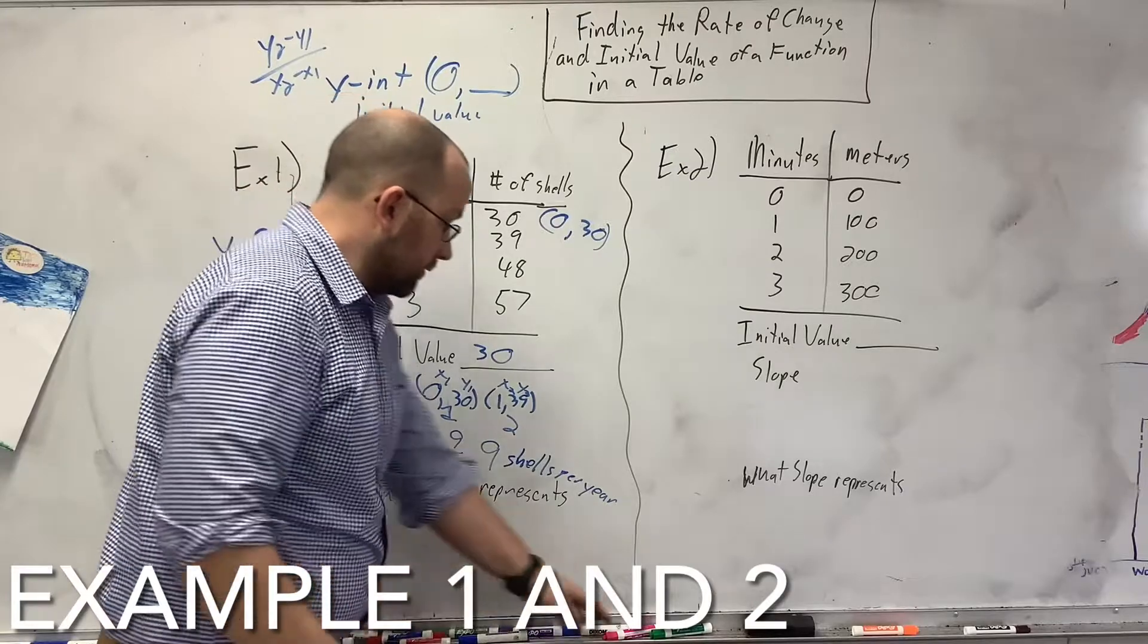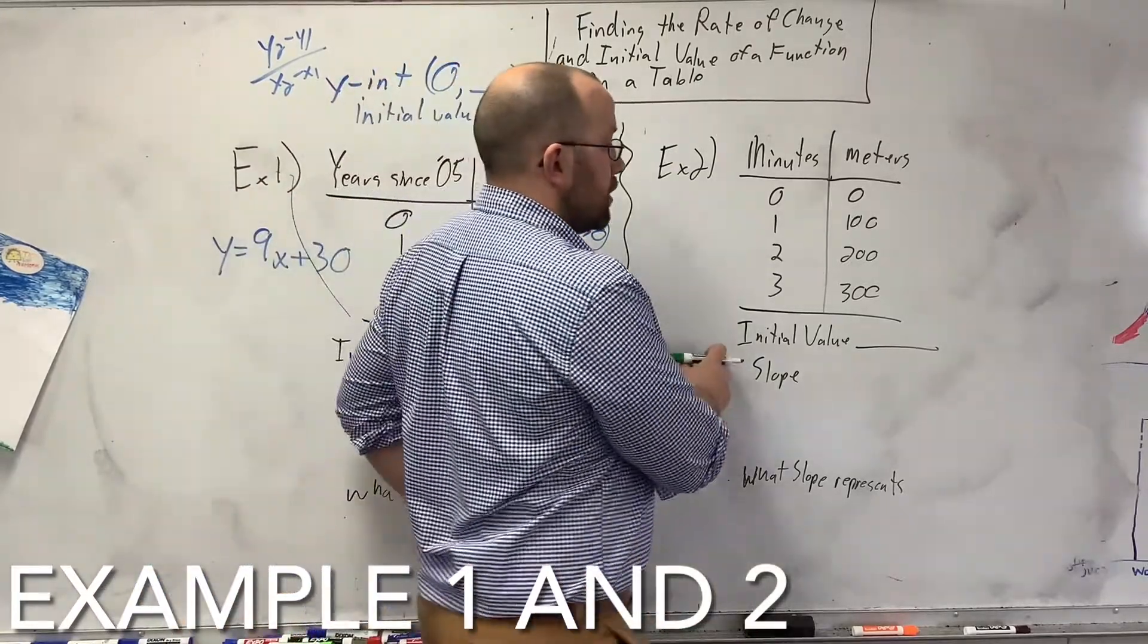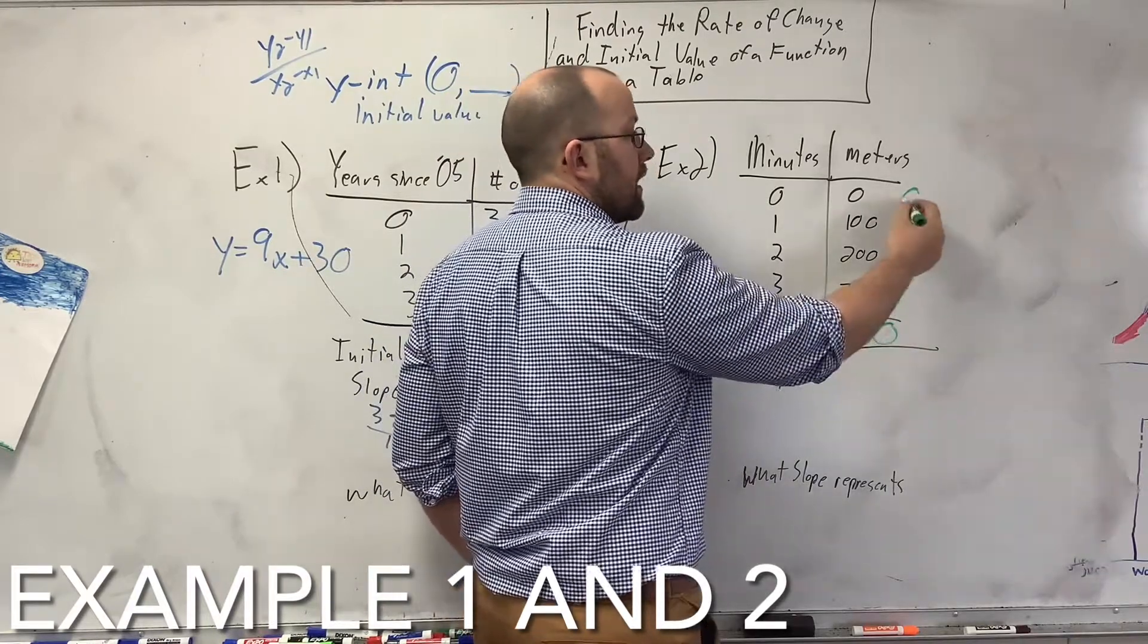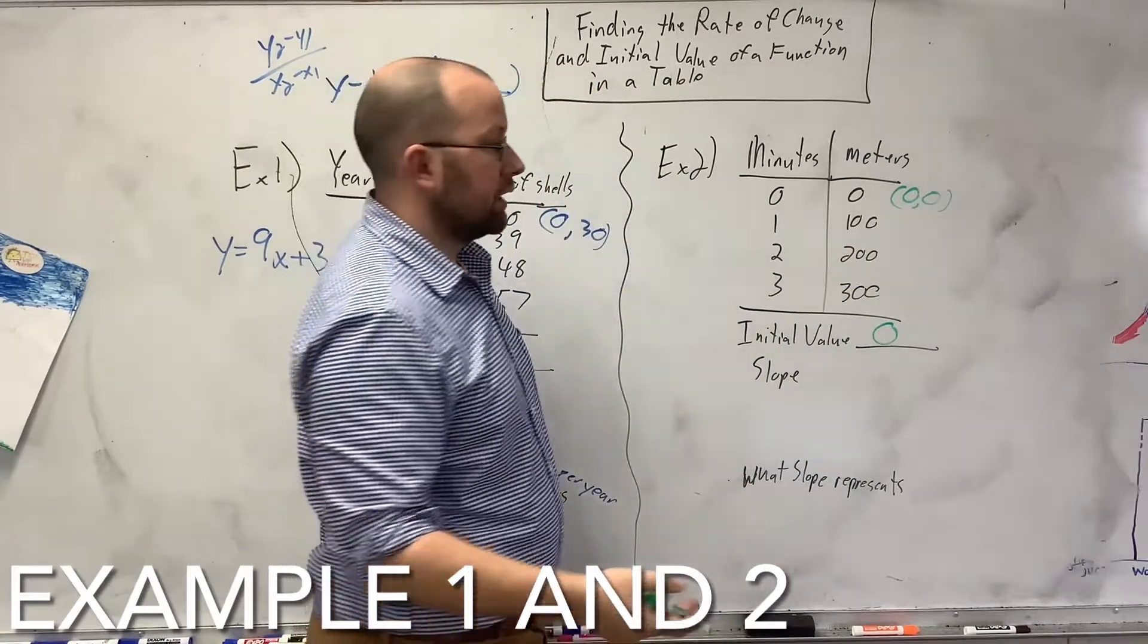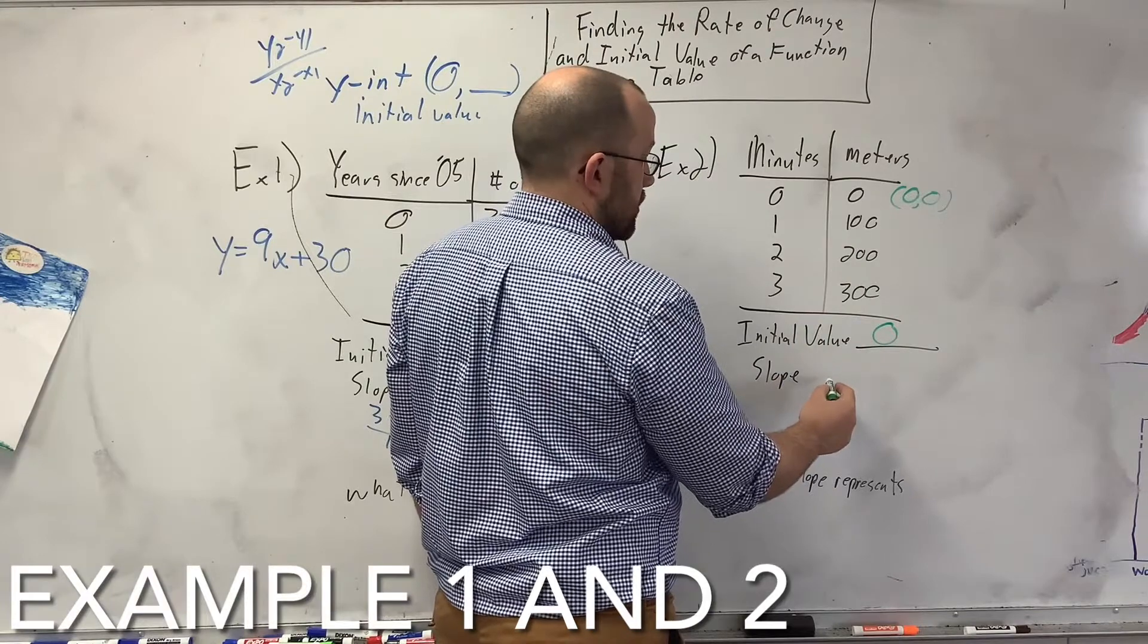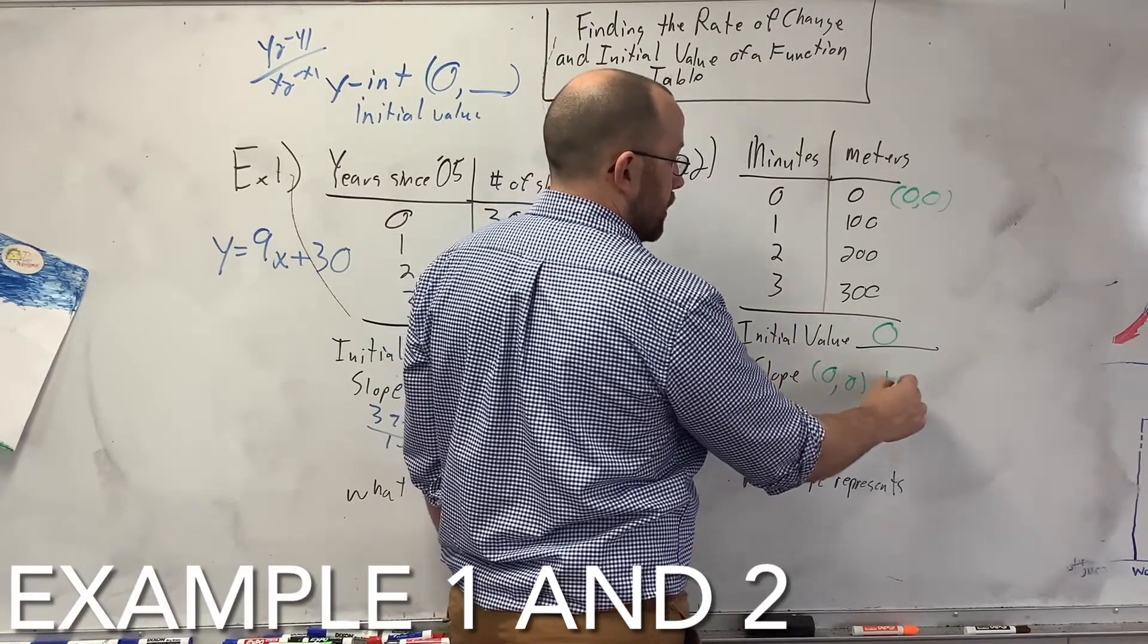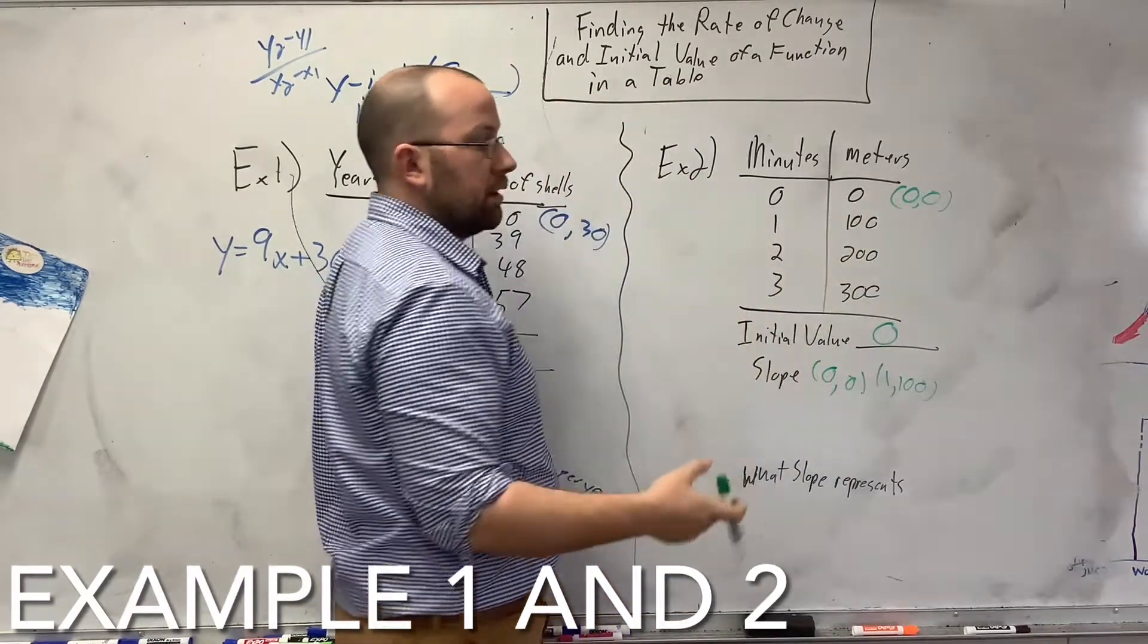Now, we come over here. Initial value is where you start off. So, this starts off at 0, 0. This is probably a race, if I had to guess. Slope, I'm going to take the point 0, 0 and 1, 100. You can take any points here. I can take 1, 100 and 3, 300. It would still be the same thing.